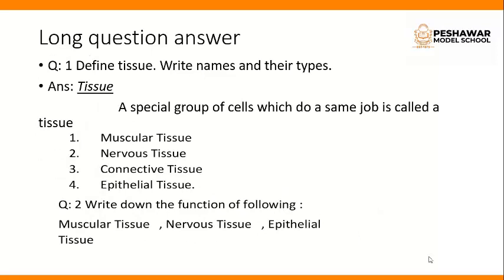Now long question answers — there are 4 long question answers and you should write these in your copy. Question number 1: define tissue and write names and their types. Answer: a special group of cells which do the same job is called a tissue. When cells group together and do the same job, they are known as tissue. There are 4 types of tissue: muscular tissue, nervous tissue, connective tissue, and epithelial tissue.